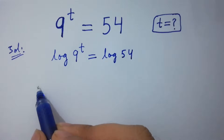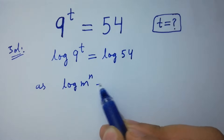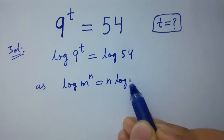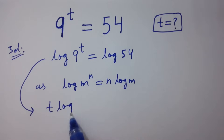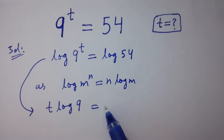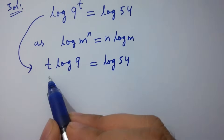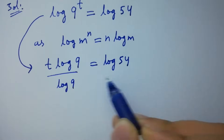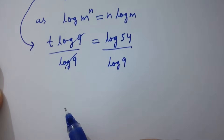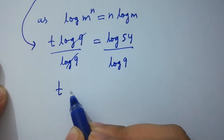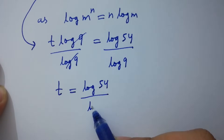As we know, log m to the power n equals n log m, we get t log 9 equal to log 54. Divide by log 9 on both sides — log 9 and log 9 cancel. t equals log 54 over log 9.